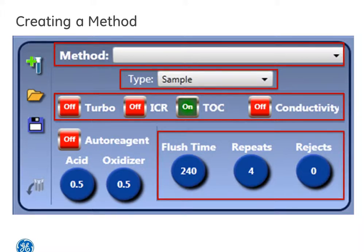Below the method settings buttons are the flush times, reps, and rejections buttons.